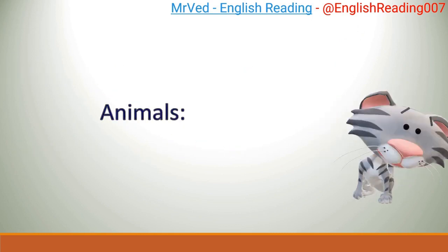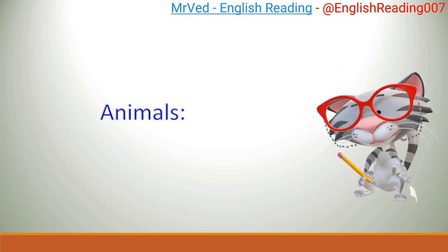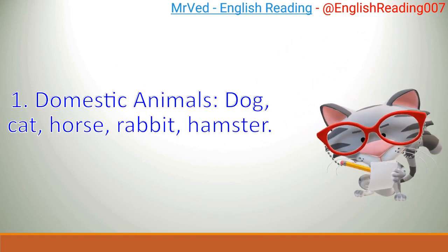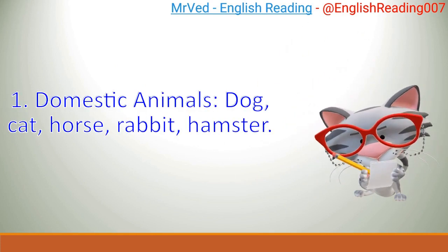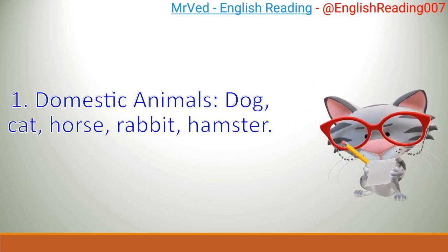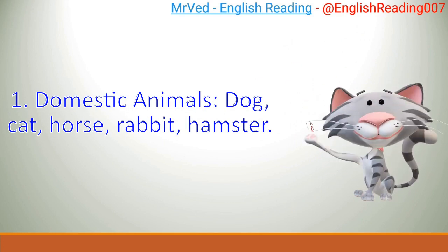Animals. 1. Domestic Animals: Dog, Cat, Horse, Rabbit, Hamster.